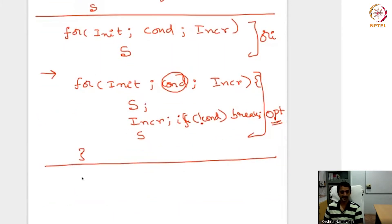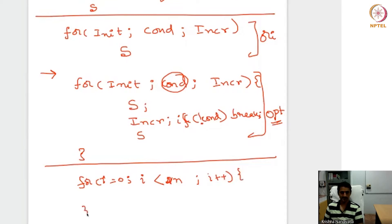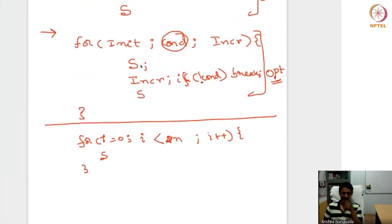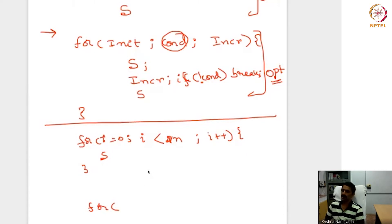Let's say my code is a for loop with i less than n, i plus plus. I want to unroll this loop once so that I'll have two bodies of S. There are two possibilities: n is a multiple of 2, or n is not a multiple of 2.